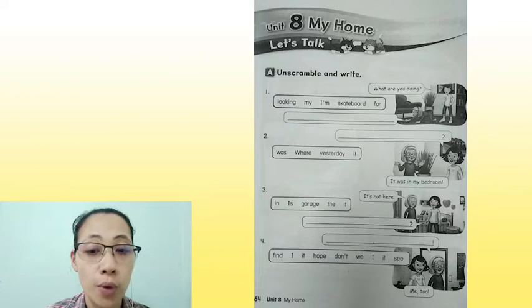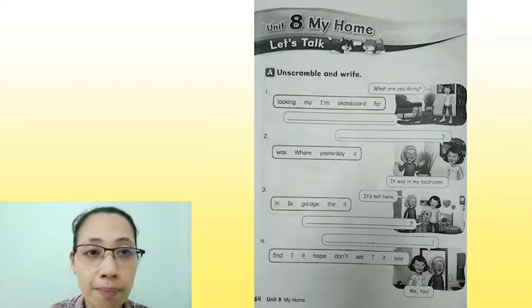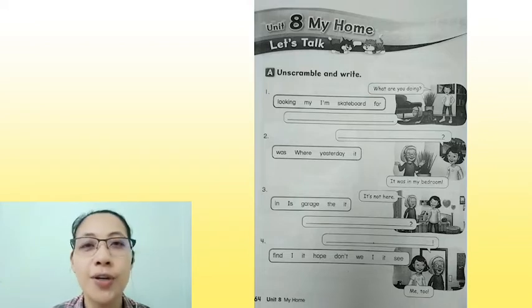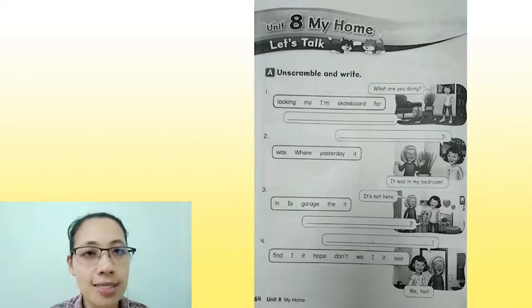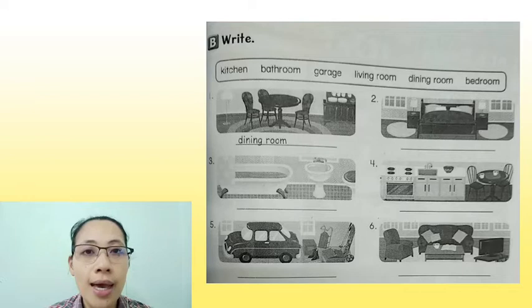Okay, what are you doing? The lesson is about page 65. Page 65. We're going to review about the rooms in the house.